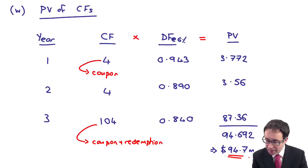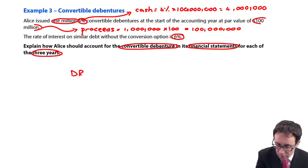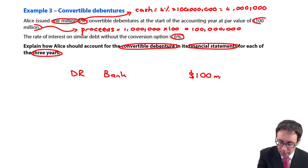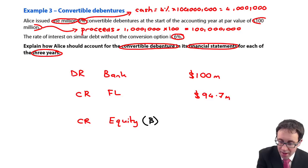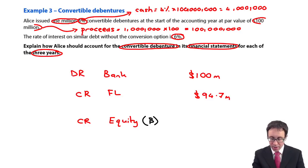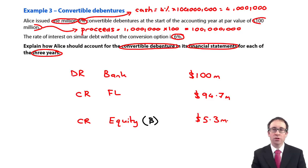Going back to the journal entries at the start: we debit the bank with 100 million, we credit the financial liability with 94.7 million, and then we credit the equity. The equity is the difference between the proceeds and the amount recognised as the financial liability — that is 5.3 million dollars. That is the equity figure we recognise and for now we just leave it there untouched.